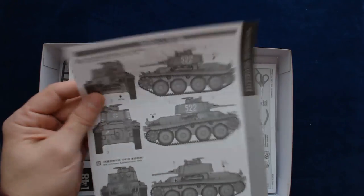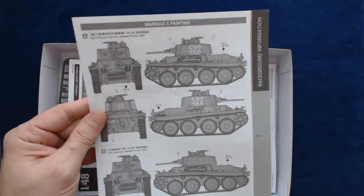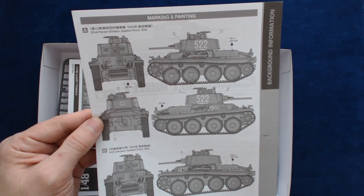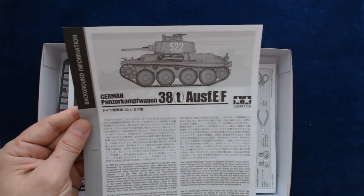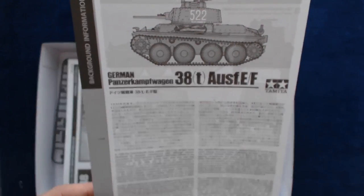And they always include lately these little reference sheets as well, which does include an identification marking guide or a decal guide, as well as usually paint guides. This one's very limited, obviously, on colors. And then a little section here, basically, about the tank.